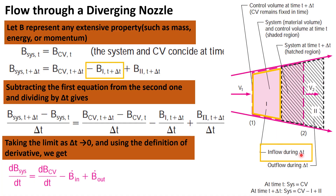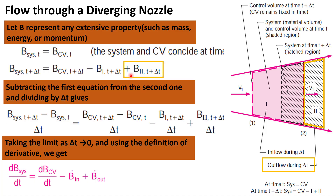The inflow during delta t time is taken as negative, and the highlighted region representing the outflow during delta t time is taken as positive. So outflow is positive and inflow is negative. In the next step we will subtract the first equation from the second equation.